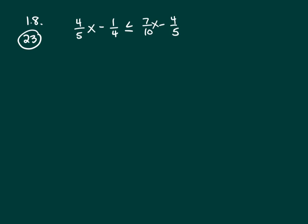We need to clear our fractions first. So you look at your denominators. What's the smallest number that 5, 4, and 10 will go into? It would be 20.